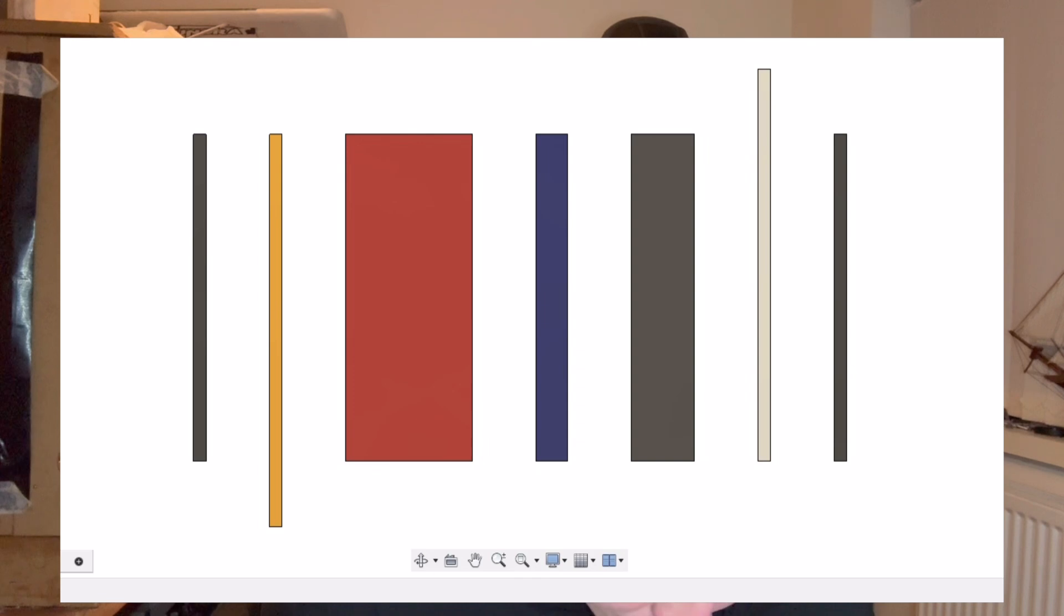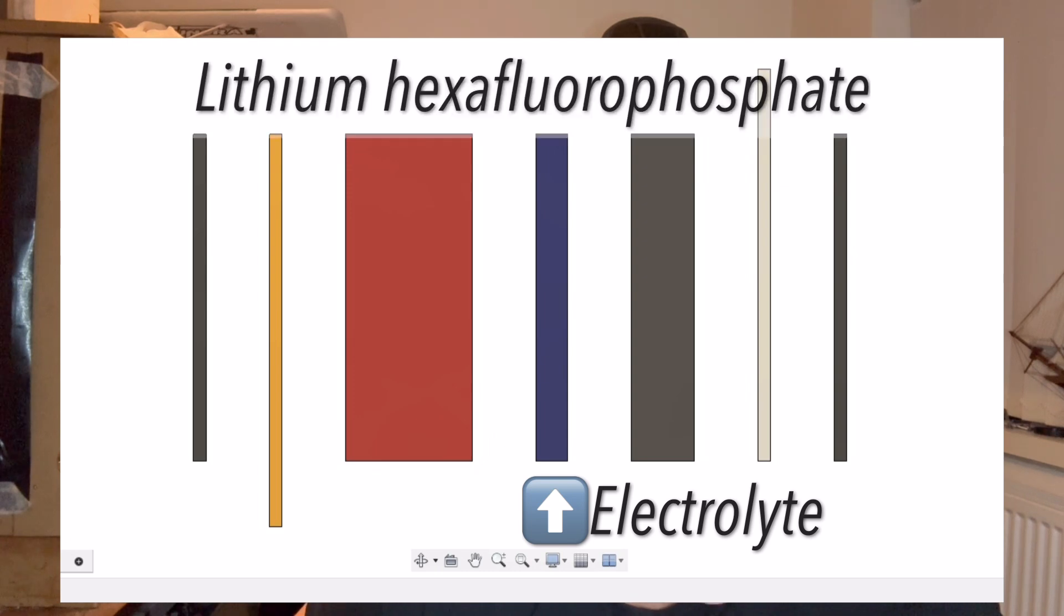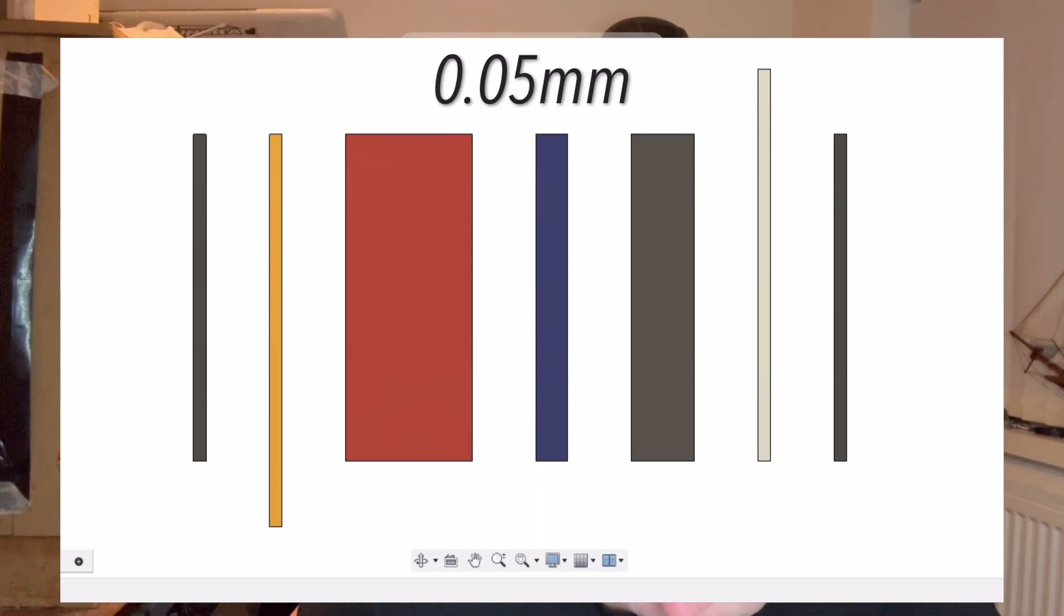On top of that cathode layer there's the electrolyte layer, which can be described as a lithium salt, typically lithium hexafluoride phosphate. That is typically around 50 micrometers thick.